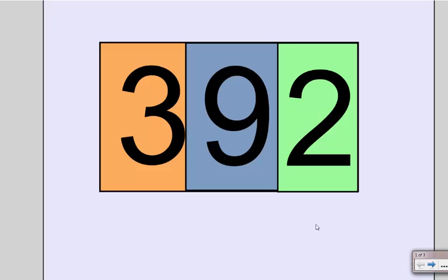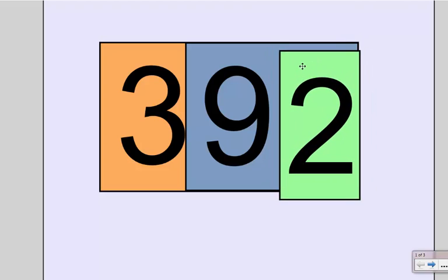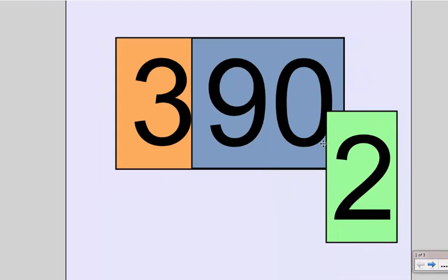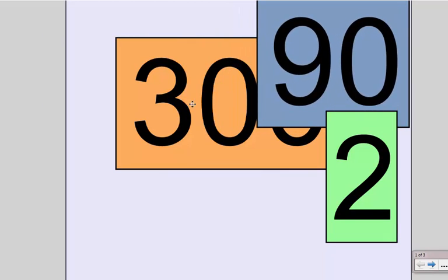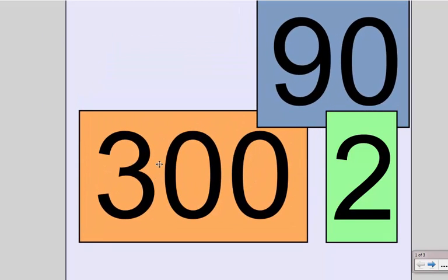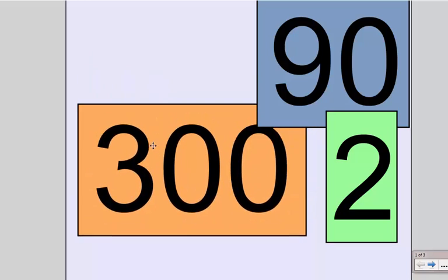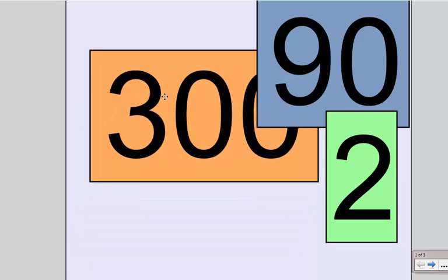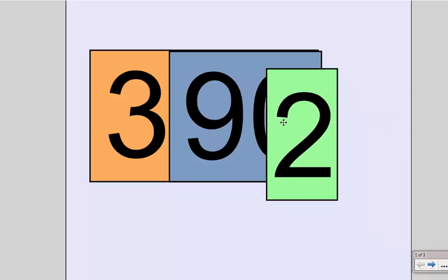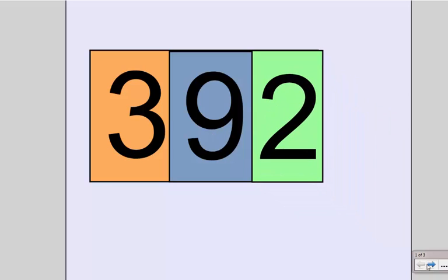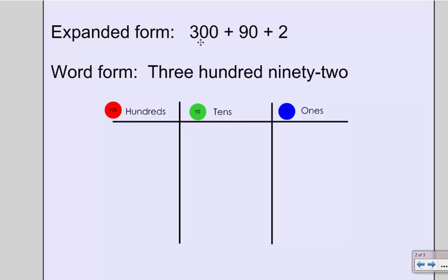We can look at 392 — the minutes you spend in school — a couple of different ways. The first way is to understand that some numbers cover other numbers. I have a 2 in my ones place, but that's covering up a hidden 0 in the number 90. The 90 is covering up the 0 in 300. So when I pull them apart, I can see the place values: 300, 9 tens, and 2 ones make up 392. So in expanded form, it's 300 plus 90 plus 2.